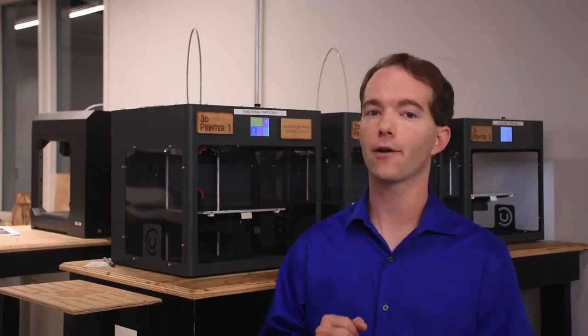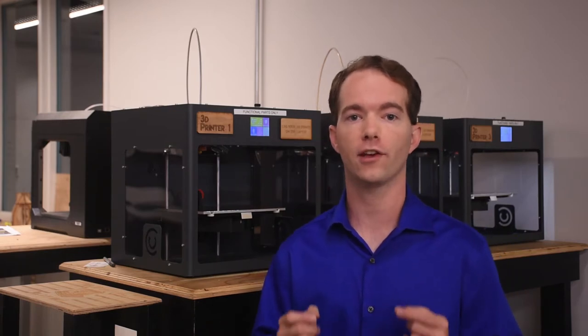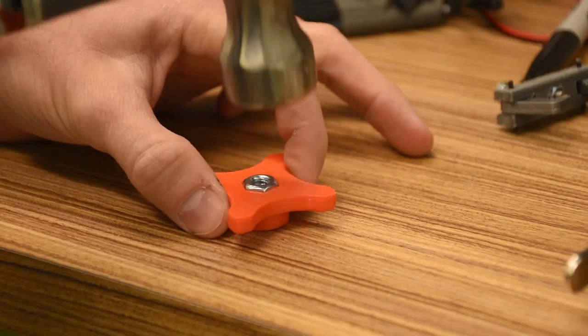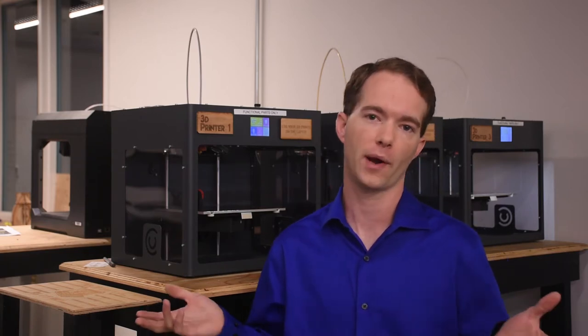If you need a tighter fit then 15 mil is the way to go, and 10 mil clearance is good for a press fit part that's not intended to ever come apart. Oh and by the way, a mil is a thousandth of an inch. It has nothing to do with the metric system which is the millimeter.